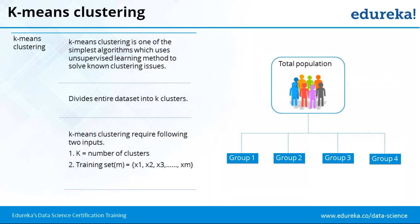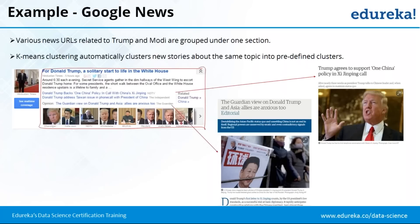One example is Google News — a single topic containing multiple links from different URLs. This is a classic example of clustering. Various URLs related to topics like Trump and Modi are grouped under one section. K-Means clustering automatically clusters news stories about the same topic into predefined clusters.